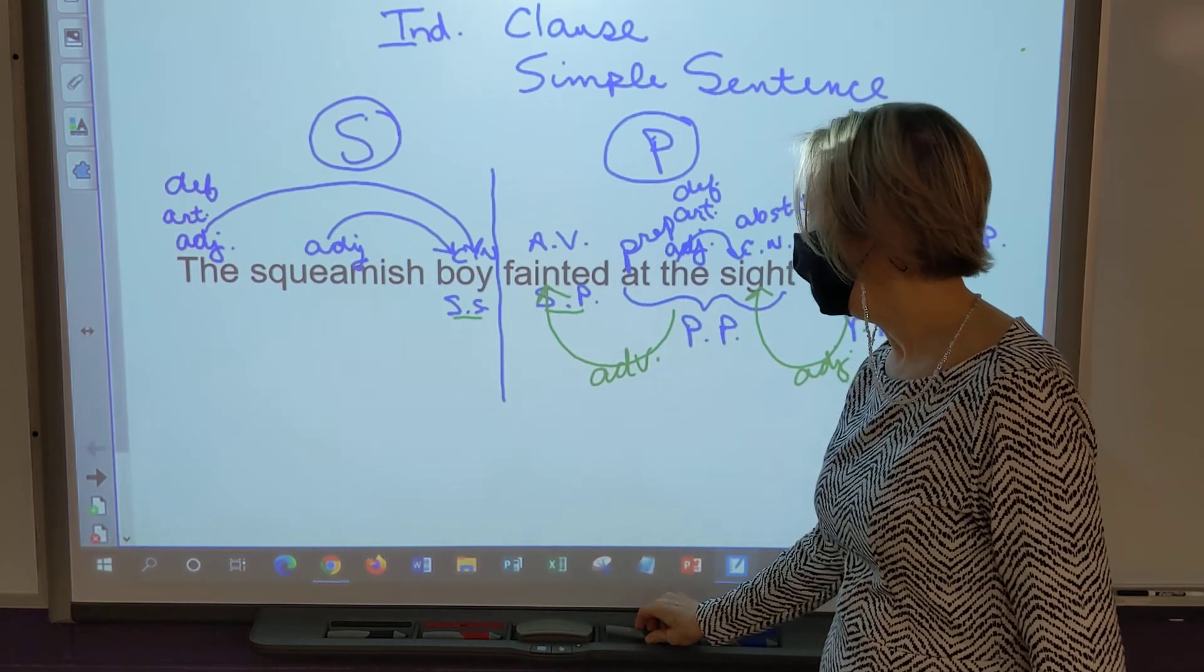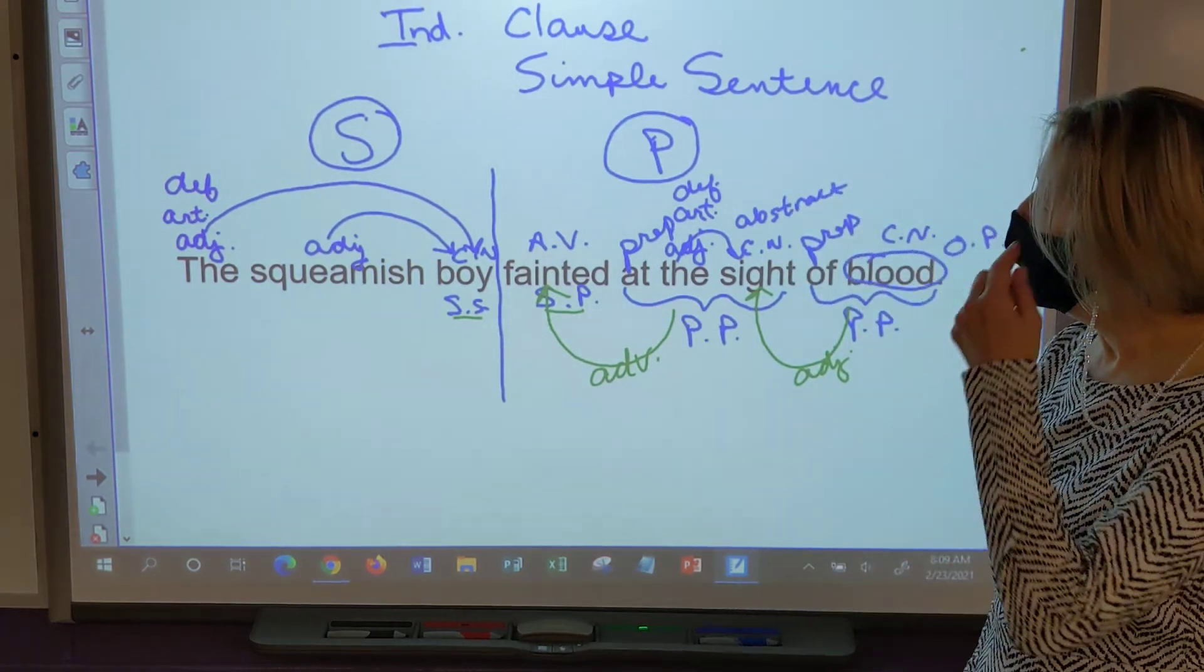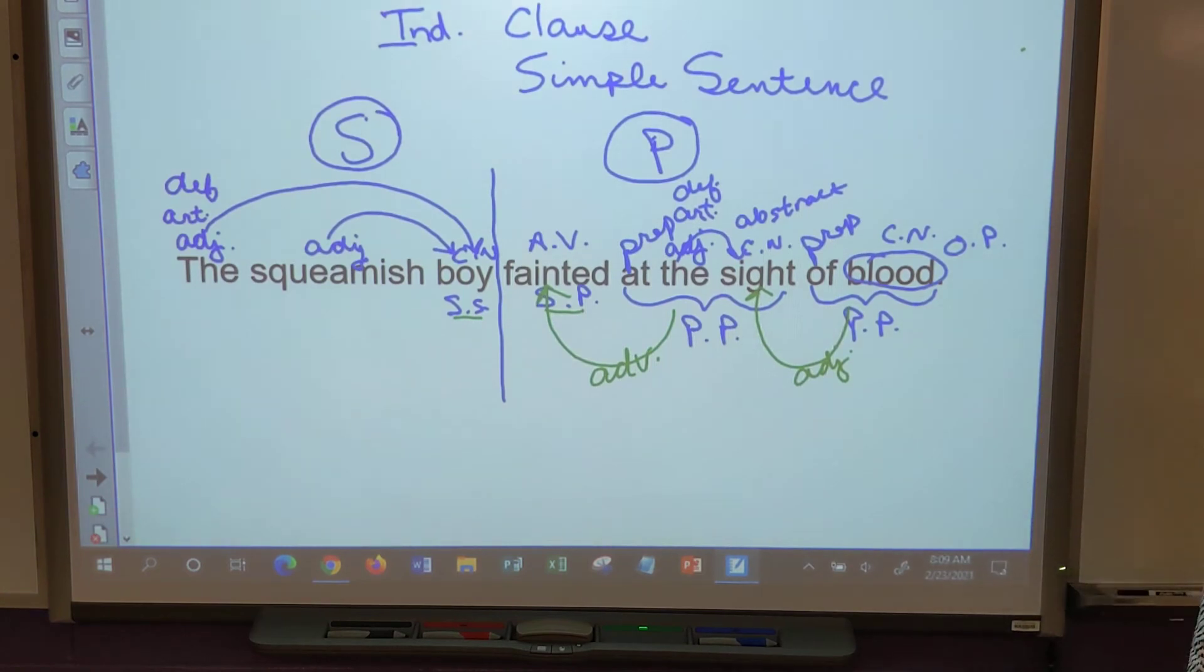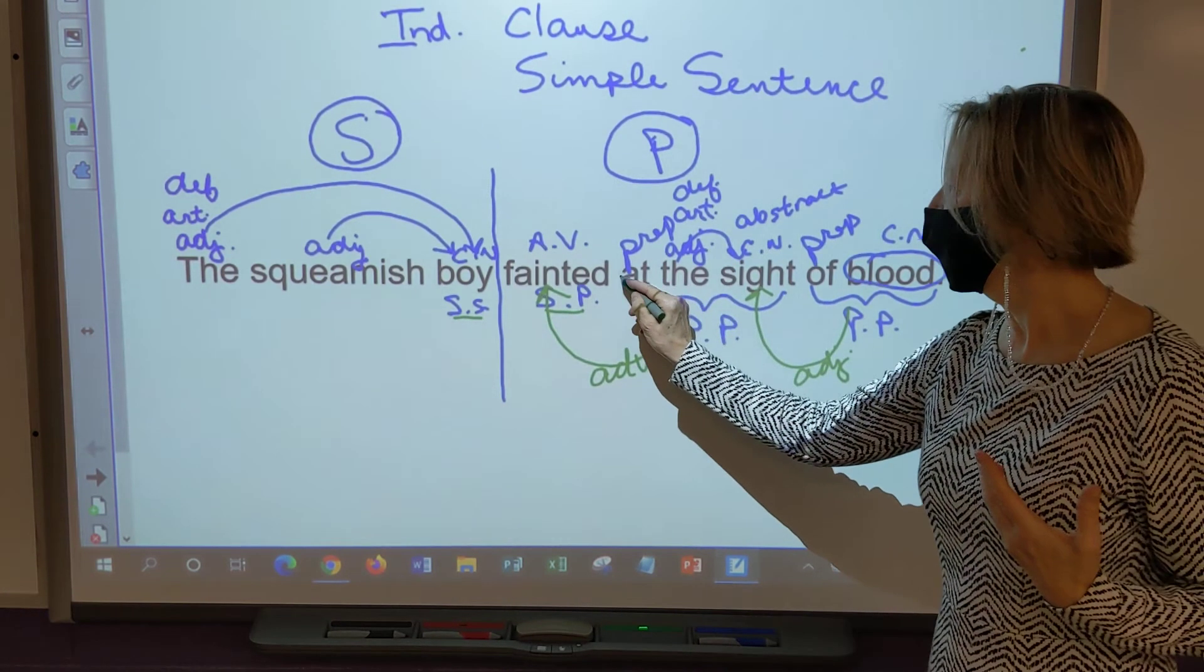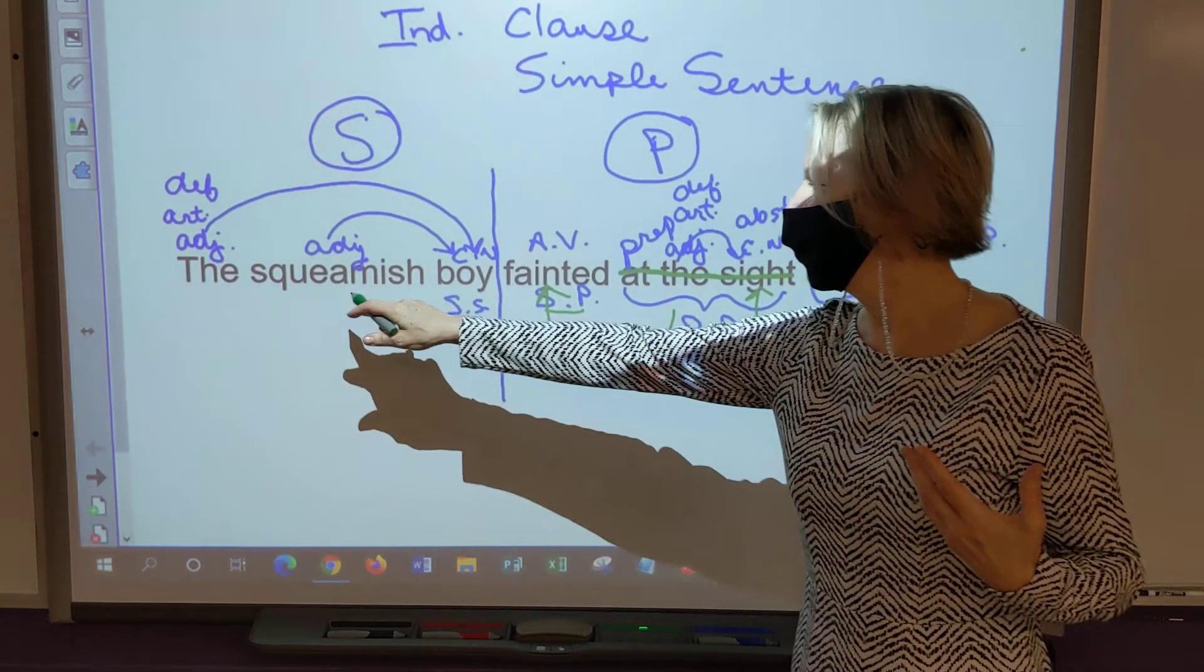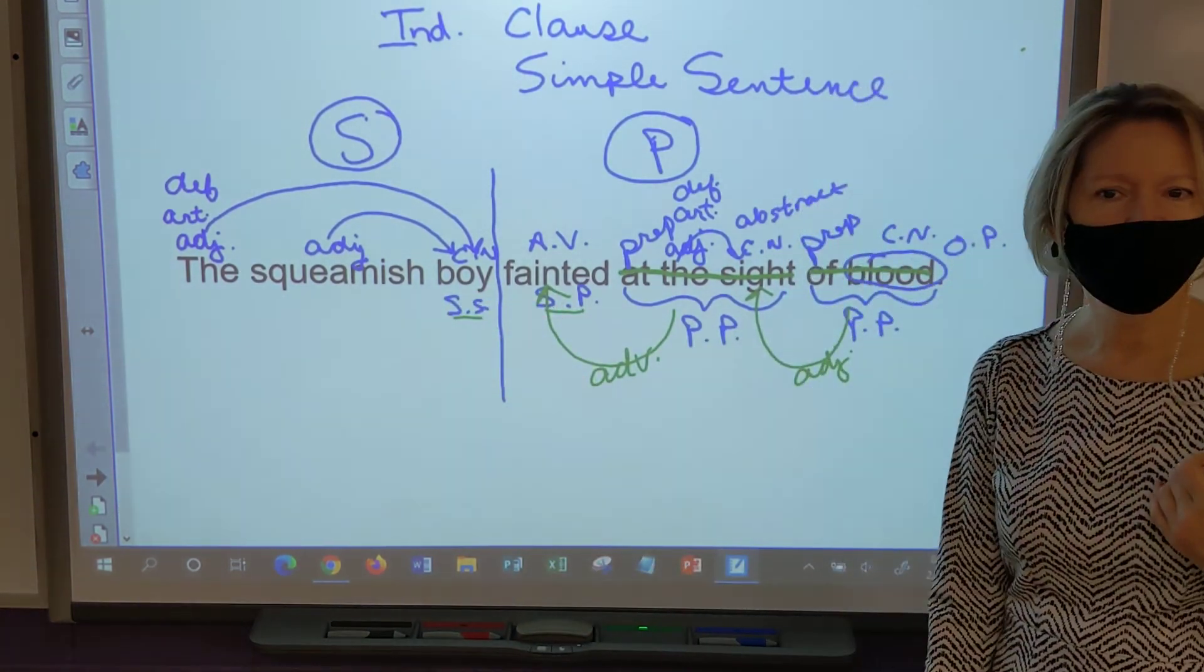But we have this other prepositional phrase. It's describing fainted, and fainted is a verb, so it's an adverb phrase. Keep in mind that prepositional phrases can usually come out of the sentence, right? So can I say the squeamish boy fainted? Yes I can.